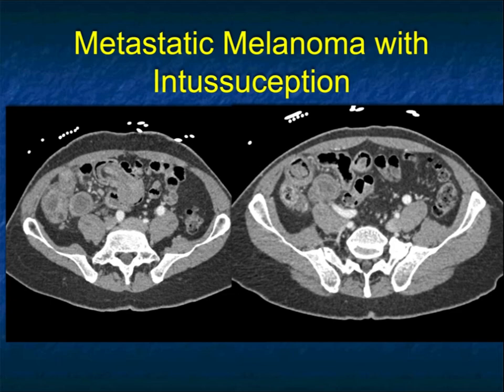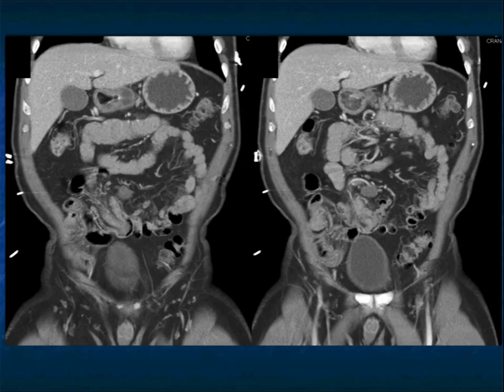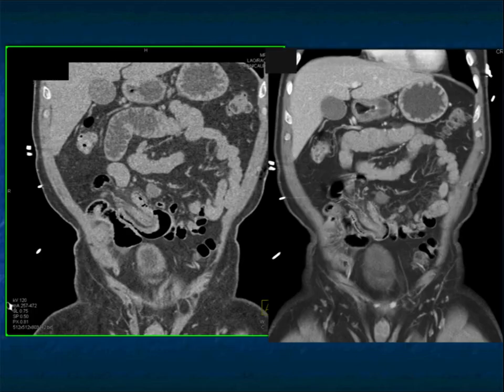Here's a nice example of intussusception in the right lower quadrant — in fact, multiple intussusceptions. This was metastatic melanoma. I'm covering two points here: intussusception can occur with small bowel tumors both benign and malignant, and there can be overlap between their appearances. Don't forget about metastatic disease. METs are becoming more common as a cause of small bowel tumors, particularly melanoma.